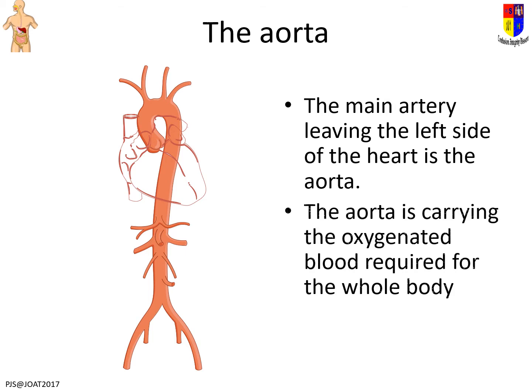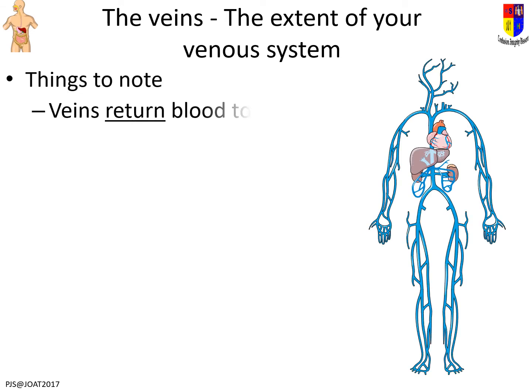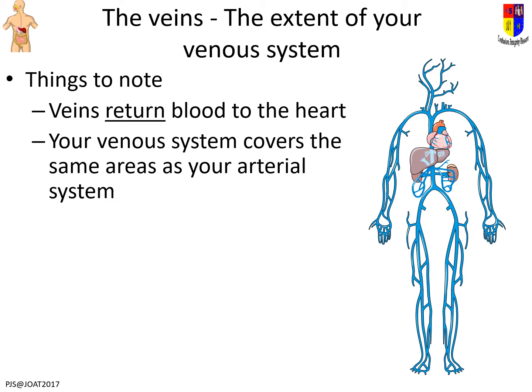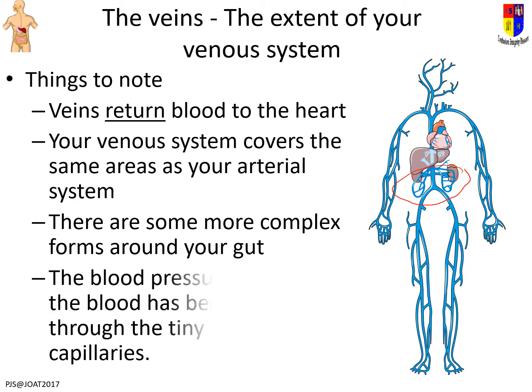Veins are basically the opposite of arteries — they run all the way through your body and return blood to the heart. There are some complicated bits around the gut, and you should look at that in more detail when you look at the villus. Blood pressure in veins is low because after the pulse, blood passes through arteries, then capillaries, and then into veins — spreading through many small blood vessels so the pressure drops and drops.